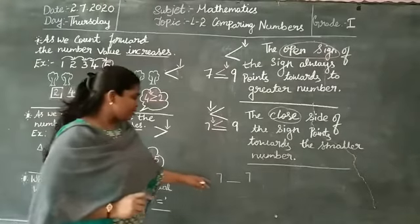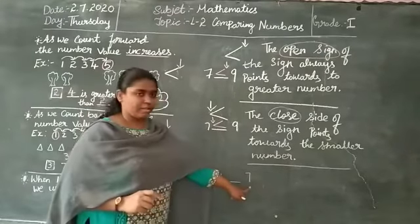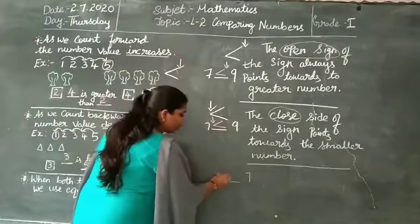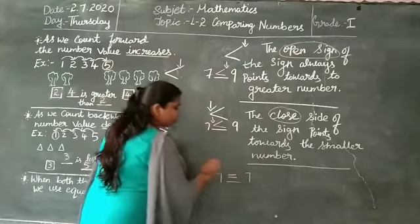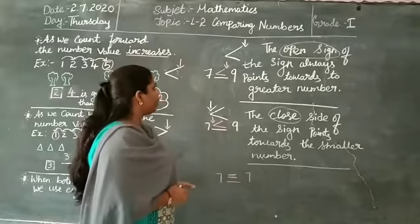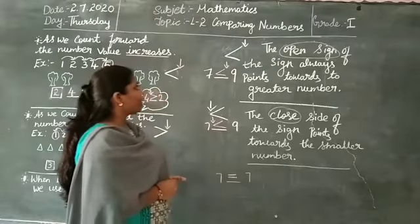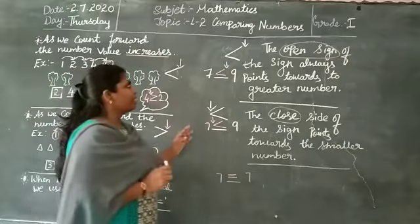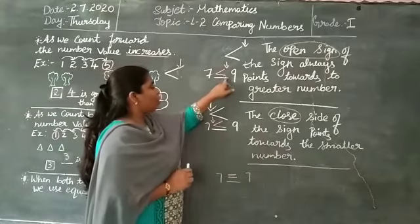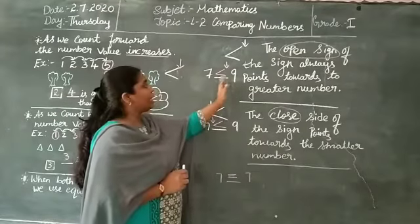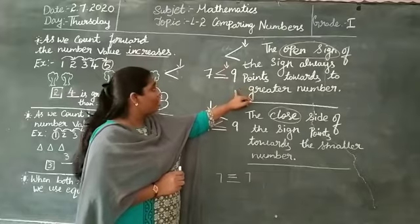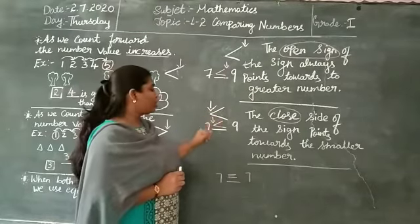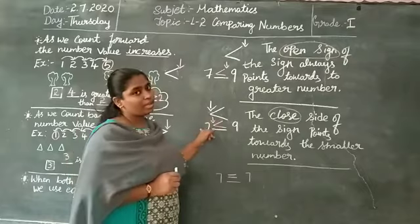And here you can see — 7 and 7. Both values are equal, so we should use the equal sign. Let me repeat once again what we need to remember. Always the open side should indicate the greater number and the close point should point towards the lesser number.